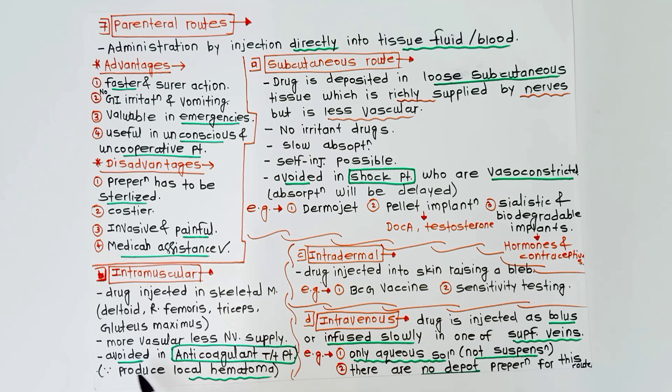Next route is intradermal. The drug is injected into the skin raising a bleb. This is an important sentence which must be present in your answer. The examples of intradermal route are BCG vaccine and sensitivity testing.